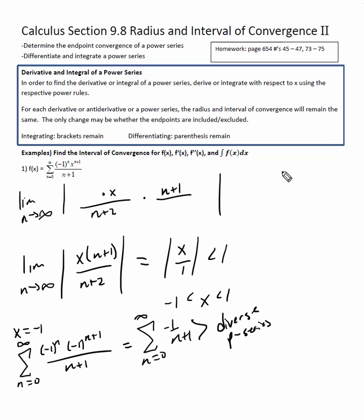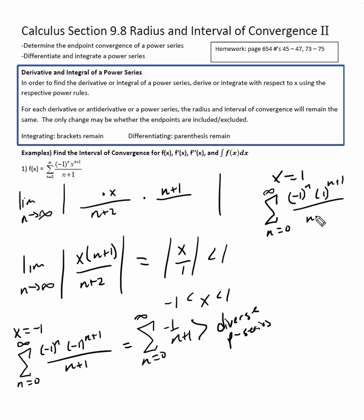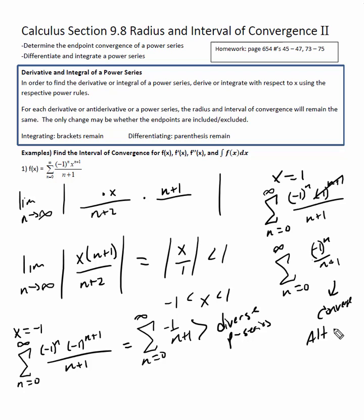Now let x equal positive one. From n equals zero to infinity, we get negative one to the n times one to the n plus one over n plus one. The one to the n plus one doesn't matter, so I get the summation of negative one to the n over n plus one. This is going to converge because of the alternating series.